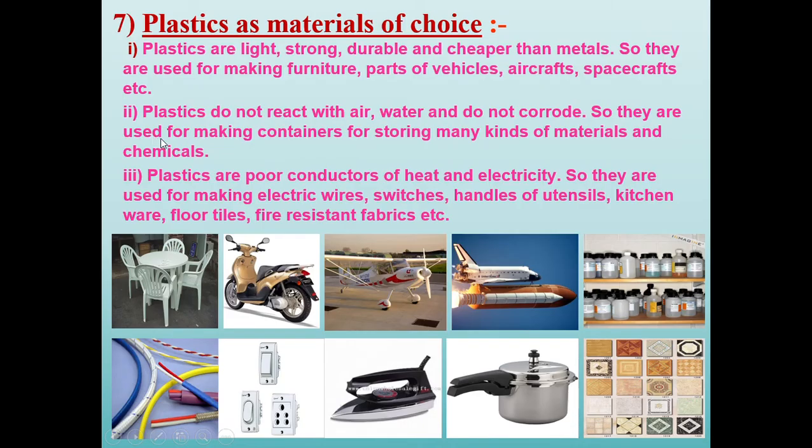Plastics are light, strong, durable, and cheaper than metals. They do not react with food items, which is why lunch boxes are made of plastic. They are used for furniture and vehicle and aircraft parts. They don't react with air or water and do not corrode the way iron rusts. They are also poor conductors of heat and electricity.